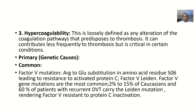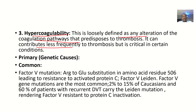The last cause could be hypercoagulopathy or hypercoagulability. This is loosely defined as any alteration of the coagulation pathways that predisposes to thrombosis. It can contribute less frequently to thrombosis but is critical. Hypercoagulability means coagulation is occurring too fast — hyper — and it can have a genetic cause.